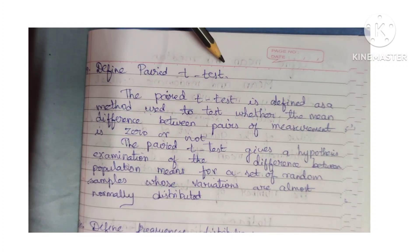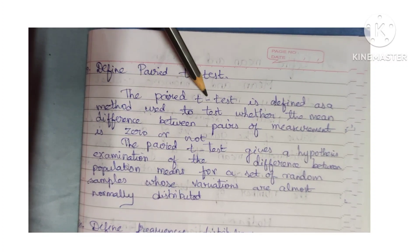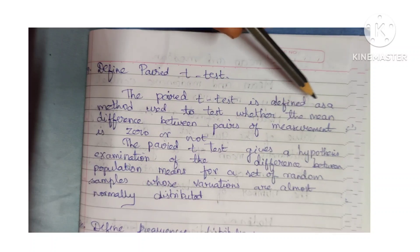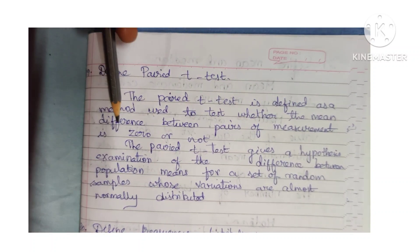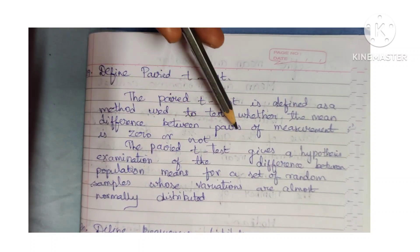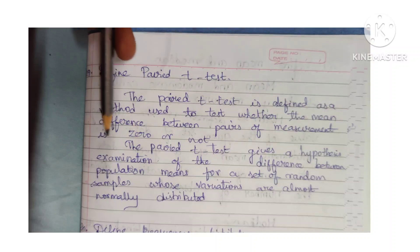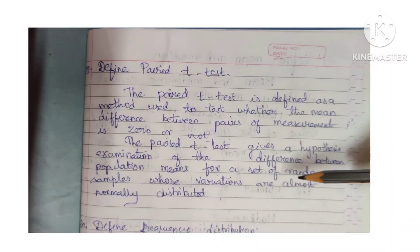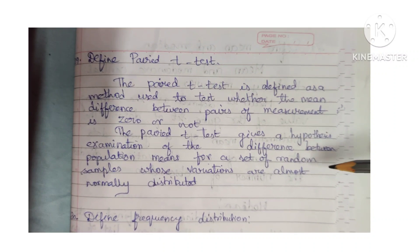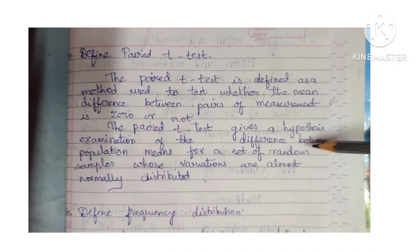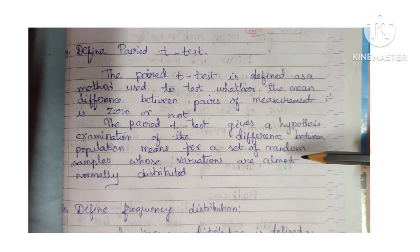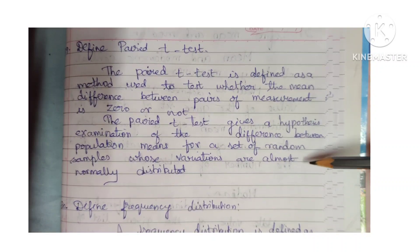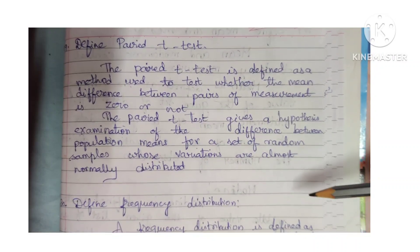Define paired t-test. The paired t-test is defined as a method used to test whether the mean difference between pairs of measurements is 0 or not. The paired t-test gives a hypothetical hypothesis examination of the difference between population means for a set of random samples whose variations are almost normally distributed.